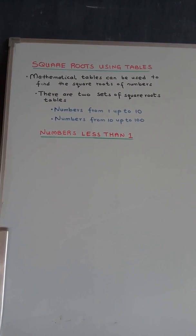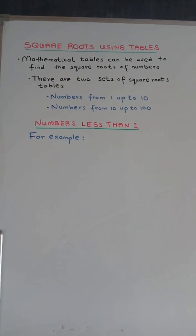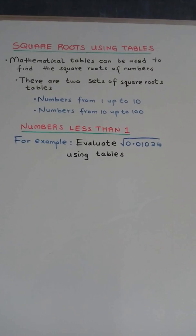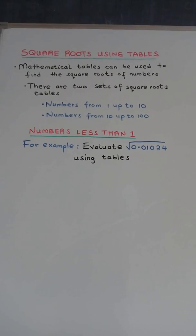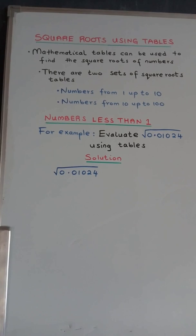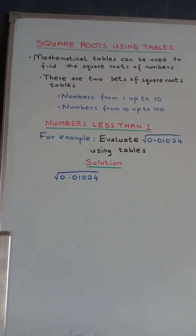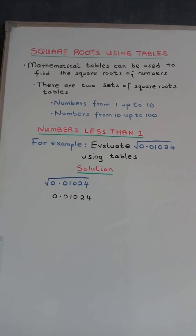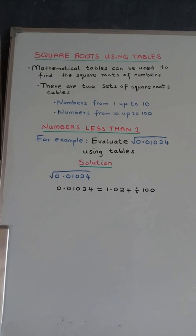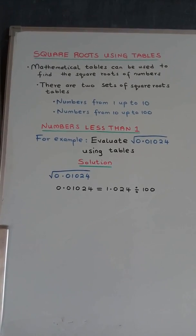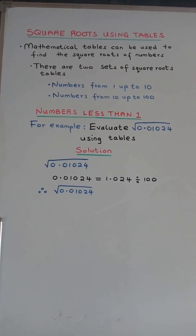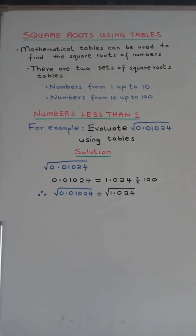Example: Evaluate the square root of 0.01024 using tables. Solution: Consider 0.01024, which is equal to 1.024 divided by 100. Therefore, the square root of 0.01024 is equal to the square root of 1.024 divided by the square root of 100.